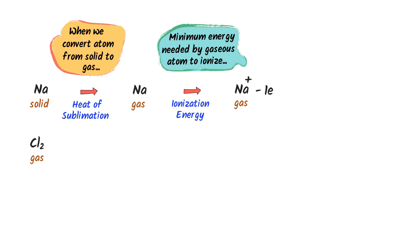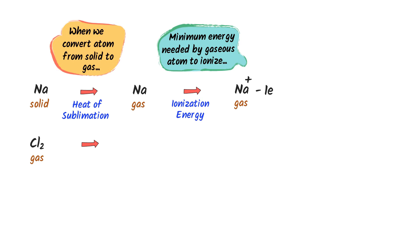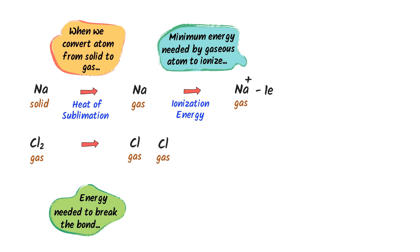Similarly, chlorine gas contains two atoms — we will cut it into two small pieces, meaning we will isolate or separate the two atoms of chlorine. Remember that the energy needed to break the bond of a chlorine molecule is called dissociation energy.